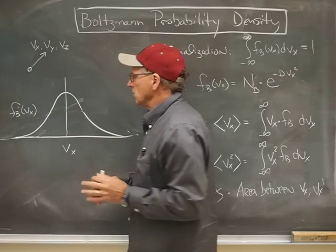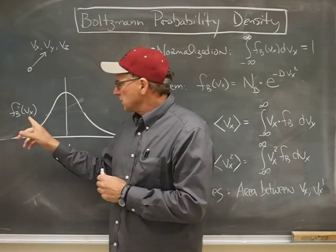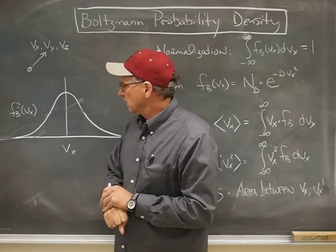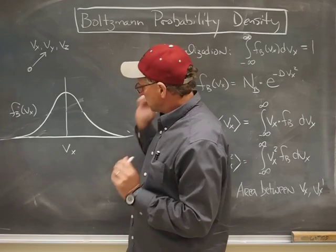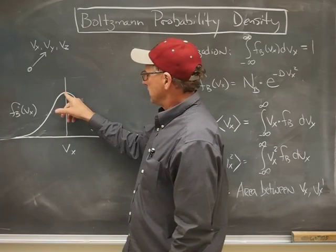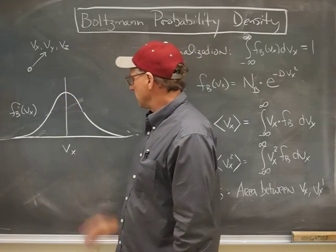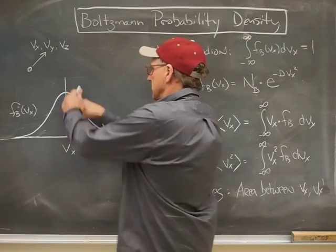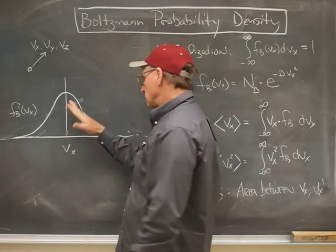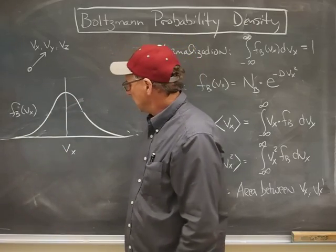The idea behind this curve, the density function itself is given by this symbol f sub b, and the idea is that it's most likely to be going at zero, actually, in the x-direction. And then it's got these wings saying that it might be going really fast to the right or really fast to the left.